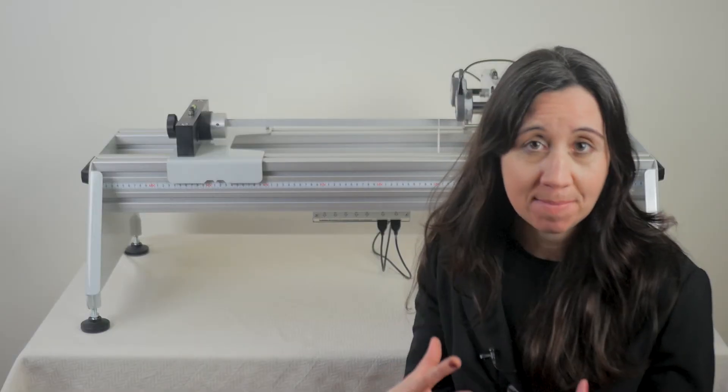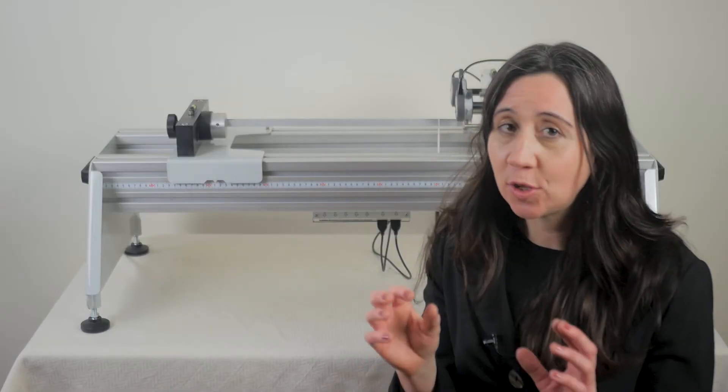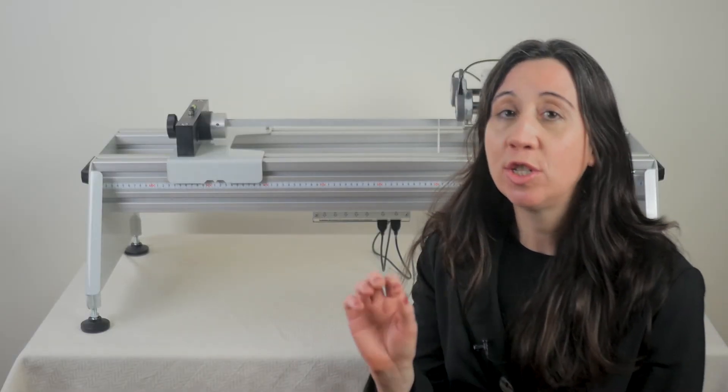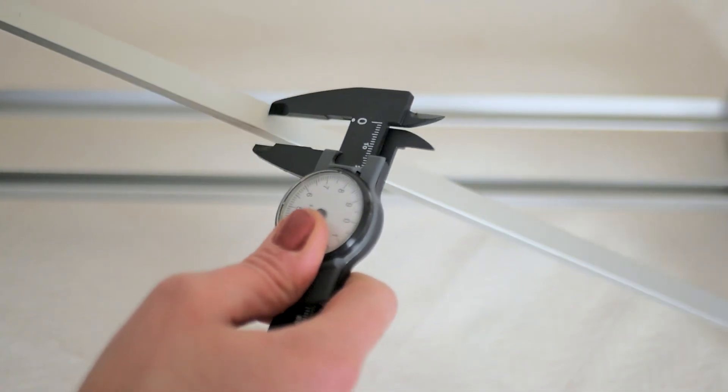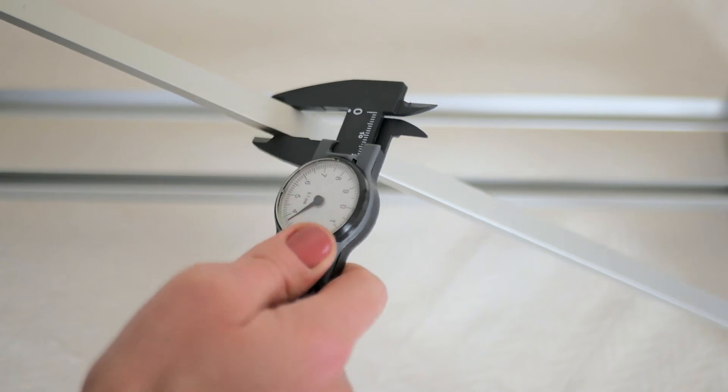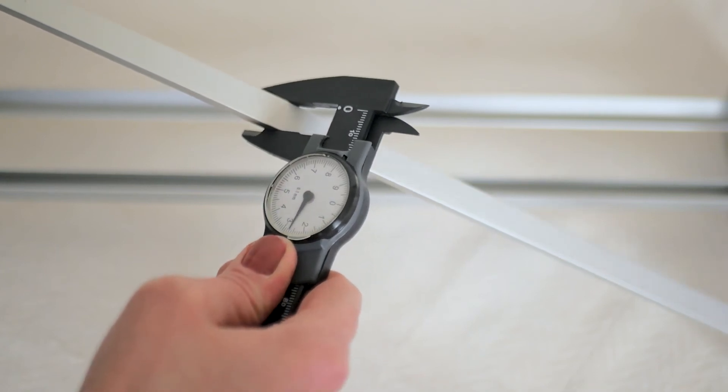To apply loads we have two mass hangers and a bundle of 25 individual 20 gram metal discs. Three aluminum test beams are included in this experiment, each with the same length and weight but different cross sections.